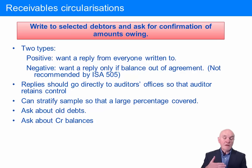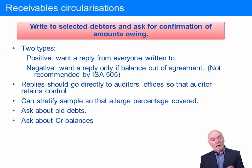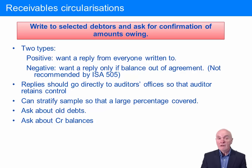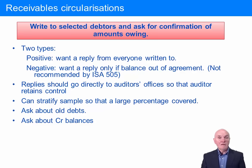Circularizations need to be set up quite early after year-end if you're doing one at year-end to verify the year-end balance. You want to get your letters out within about a week, because it'll take a while for them to reach the client's customers, for the right people in the accounting department to deal with them, and for them to send it back. You also want time to follow up non-replies — for a very big balance where the customer hasn't replied, you may want to send a second letter. And you want time to follow up any discrepancies which need to be explained.